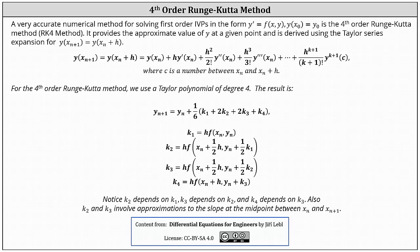A very accurate numerical method for solving first-order initial value problems in the form of y' equals f of x, y with initial condition y of x sub 0 equals y sub 0 is the fourth-order Runge-Kutta method, often referred to as the RK4 method. It provides the approximate value of y at a given point and is derived using the Taylor series expansion of y of x sub n plus 1, which equals y of x sub n plus h. The fourth-order Runge-Kutta method uses a Taylor polynomial of degree 4.